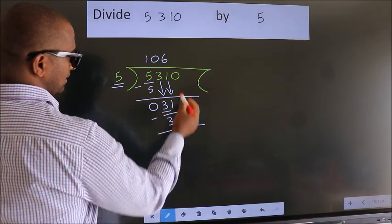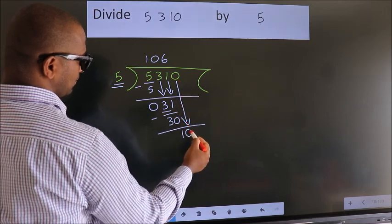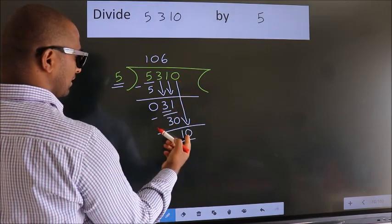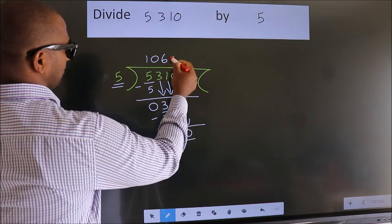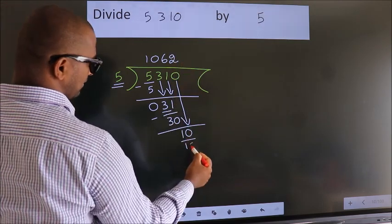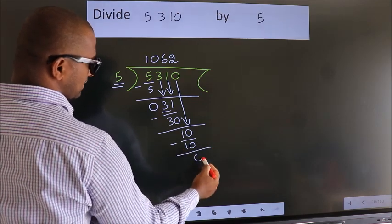After this, bring down the beside number, so 0 down, making 10. When do we get 10? In the 5 table: 5 twos is 10. Now we subtract and get 0.